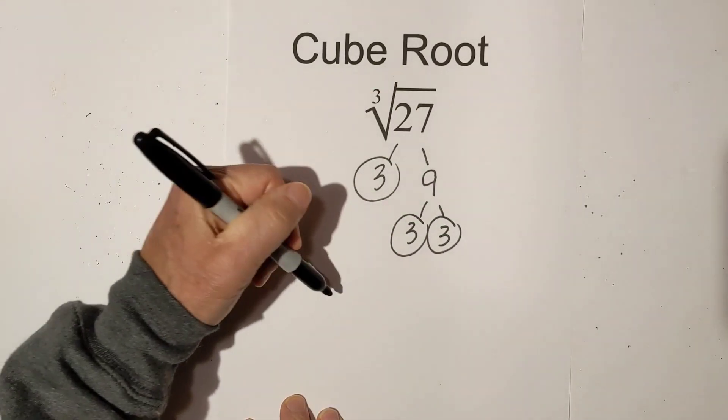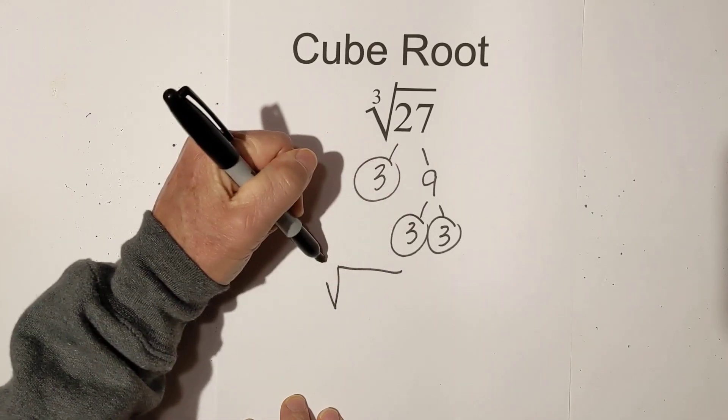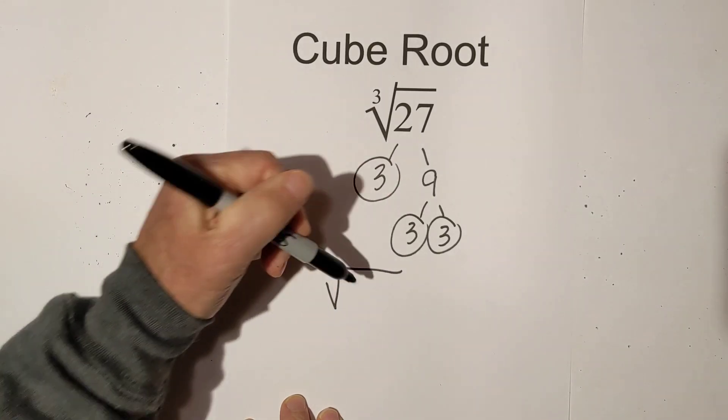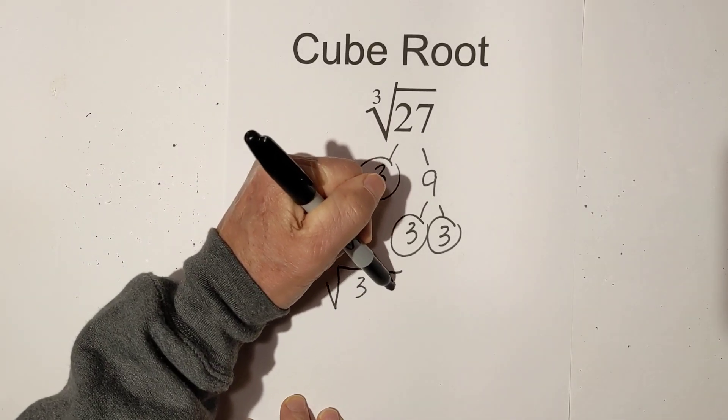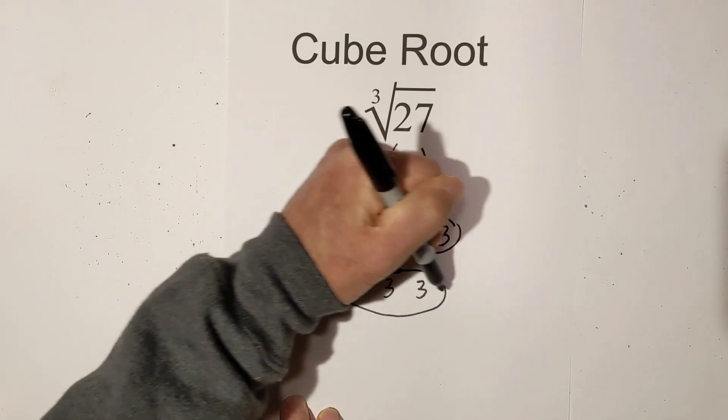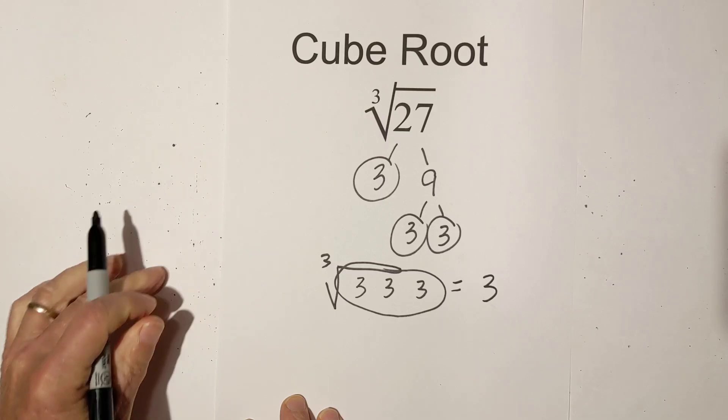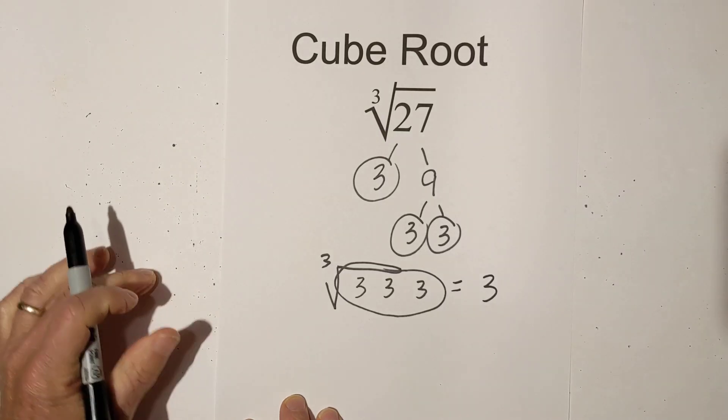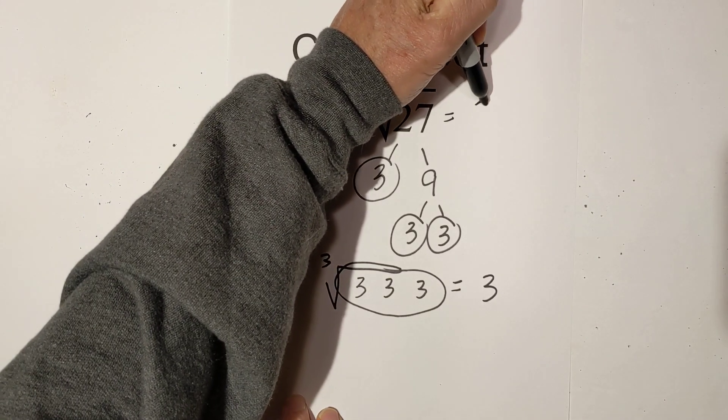And so now let's do the same thing. Let's place them under the cube root sign. So that's 3, 3, 3. Let's pull out groups of 3. Okay so it looks like the cube root of 27 is 3.